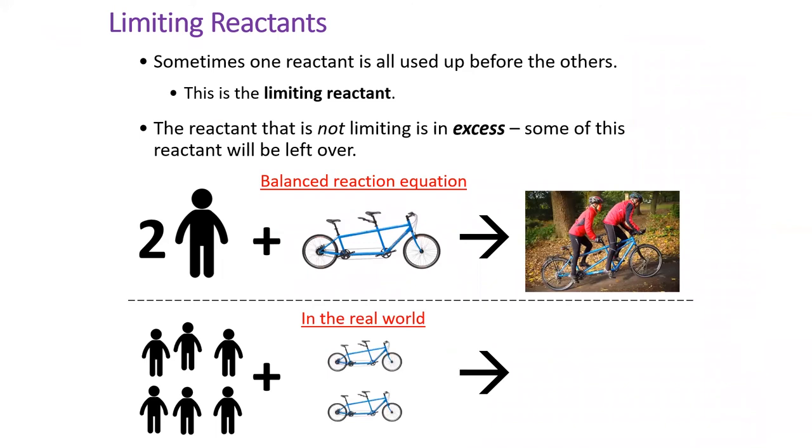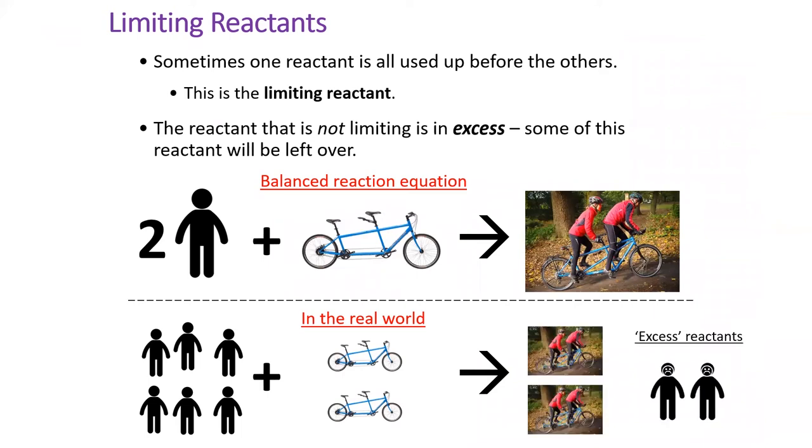Suppose we had a situation where six people wanted to ride, but we only had two tandem bicycles. Two people would be left without bicycles. We call the bicycles the limiting reactant and the people are in excess.